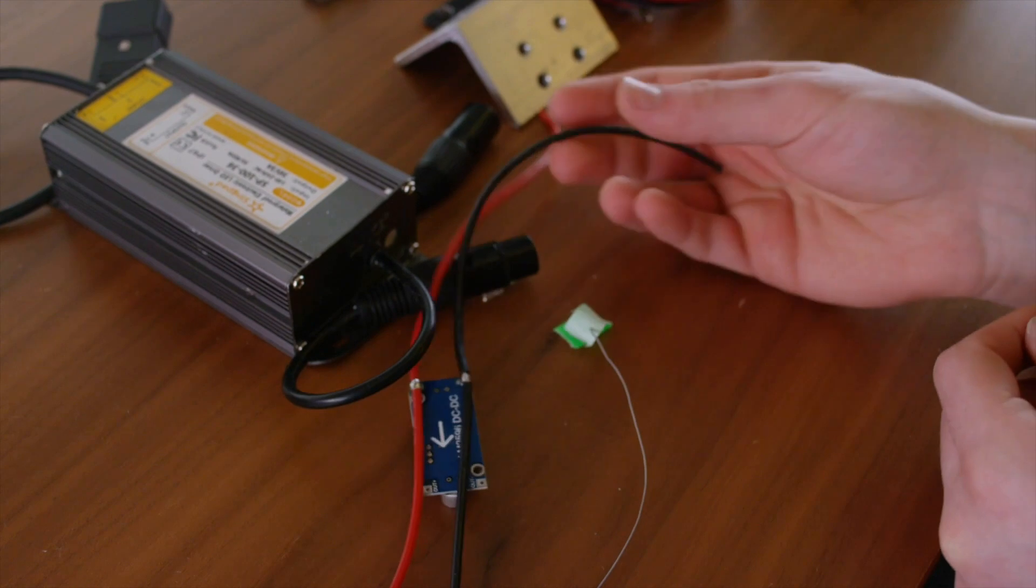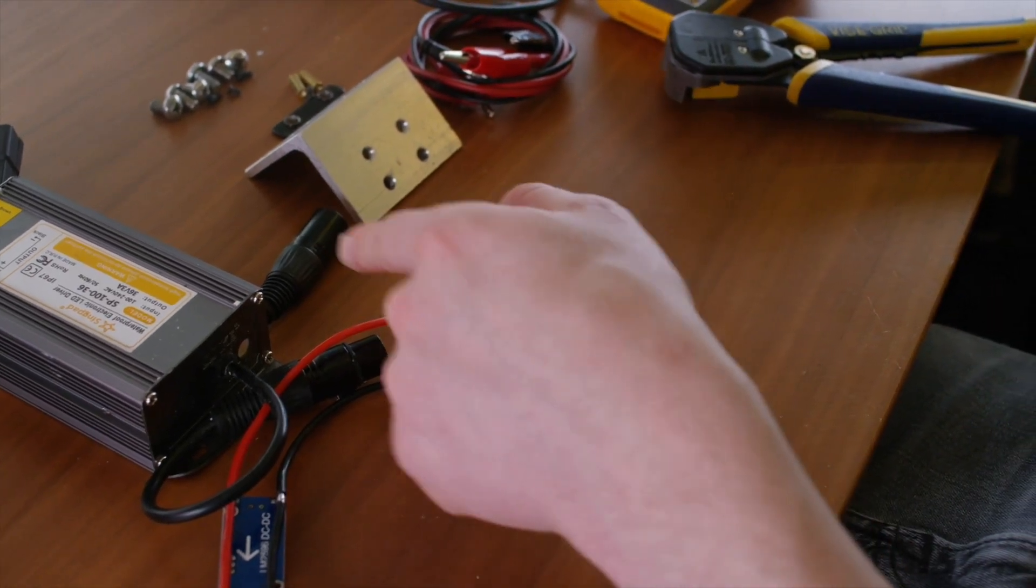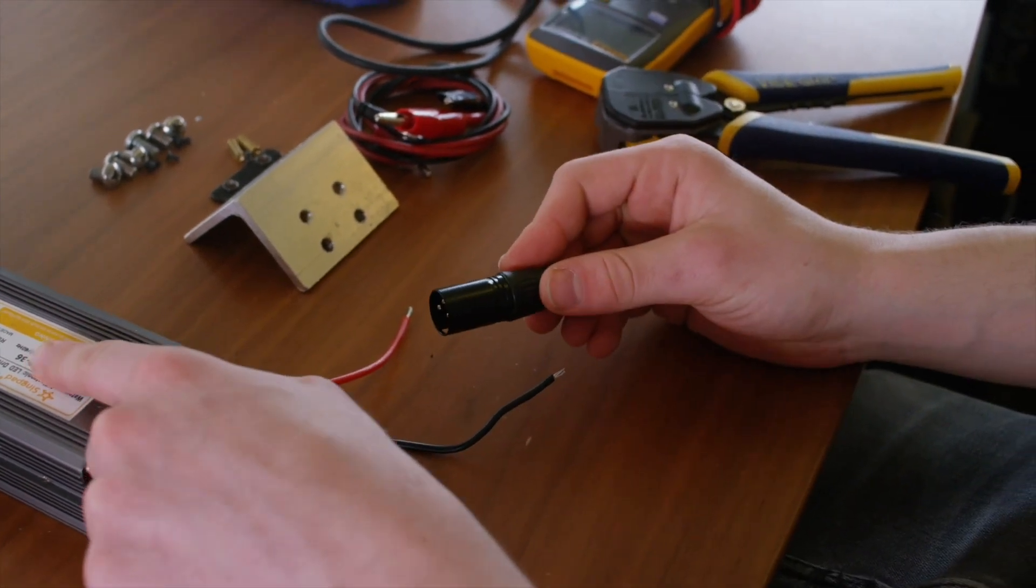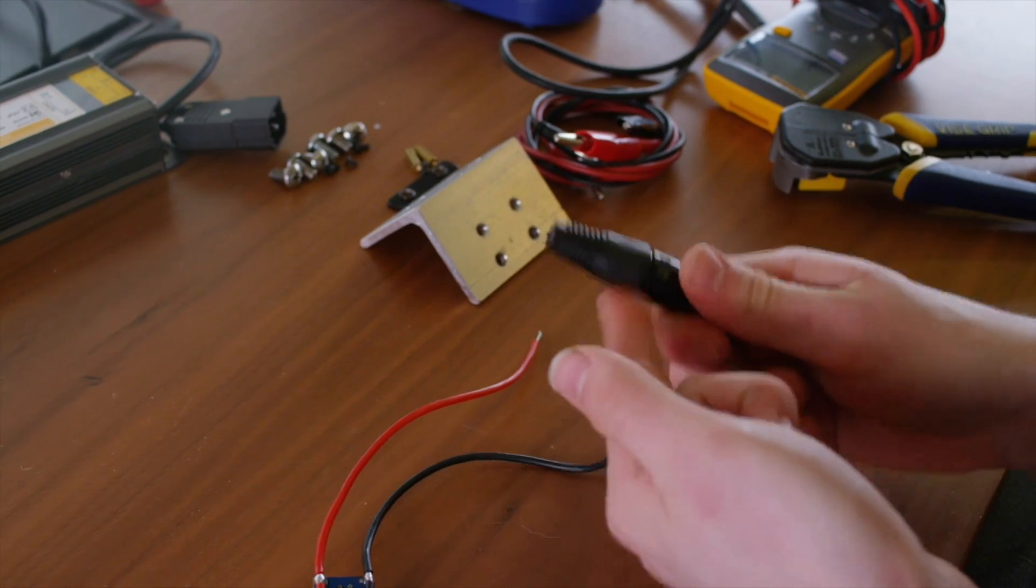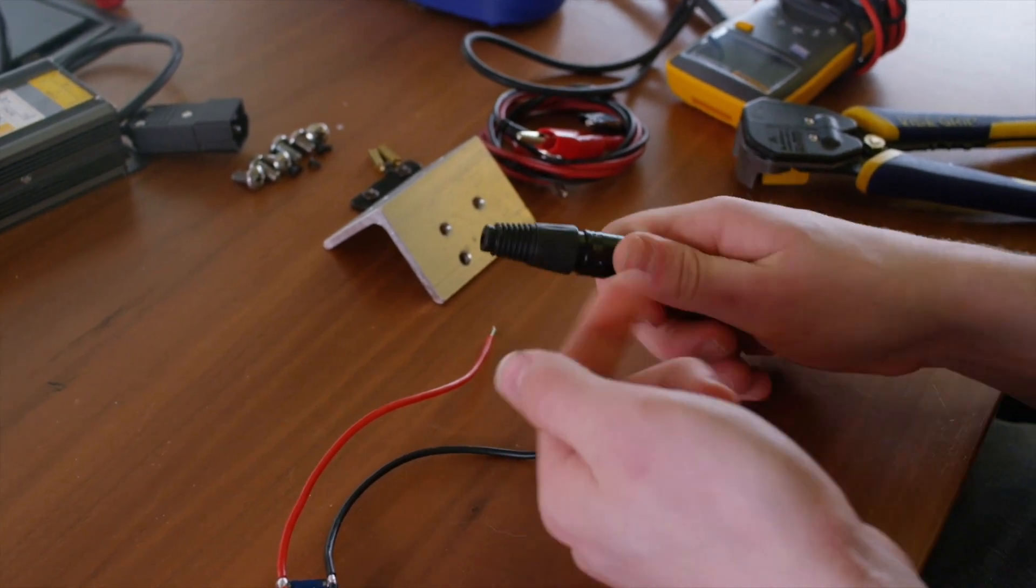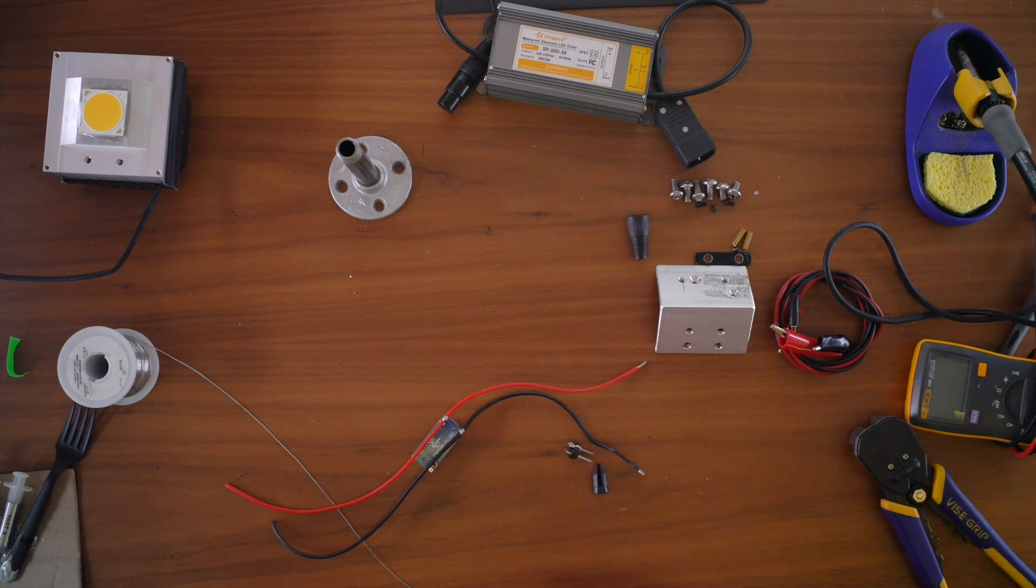Now you can go ahead and strip one end of this wire. We're going to solder this wire to our XLR connector. That way it can receive power from our power supply. So go ahead and spin the cable shield off of the XLR. And the whole connector should come apart.